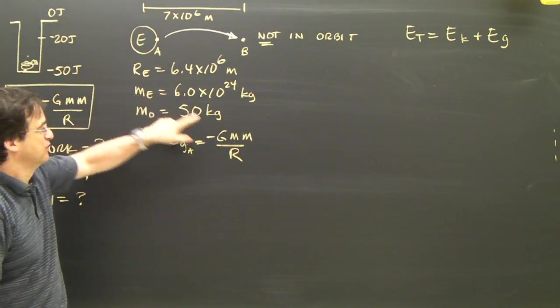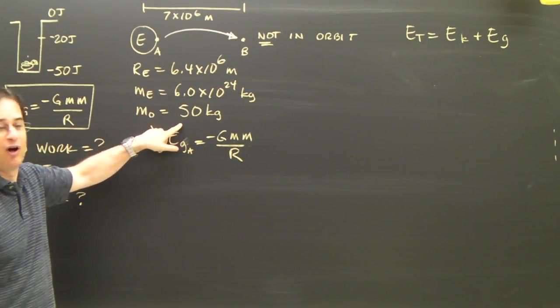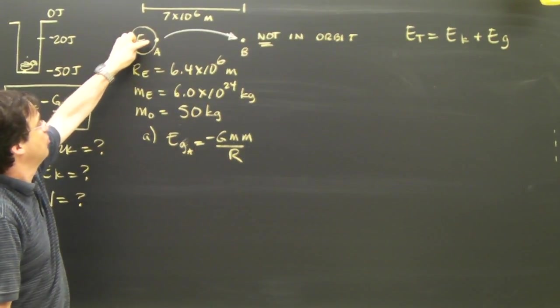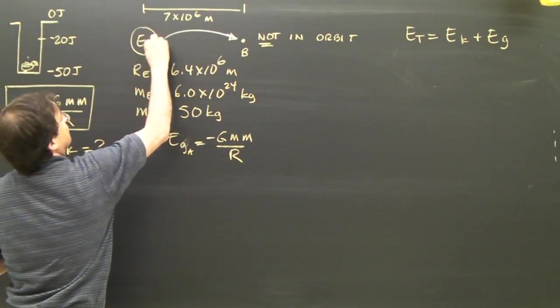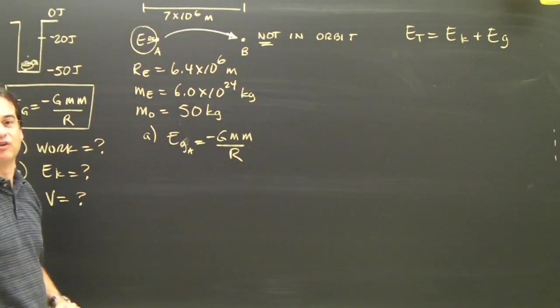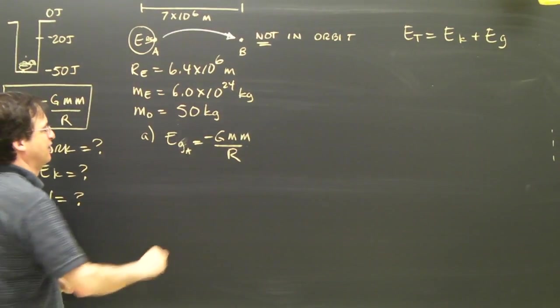This is the mass of the Earth. This is the mass of the satellite or object, which is 50 kilograms. And this is the distance at that point, which would be the radius of the Earth because that's how far I am from the center of the Earth.